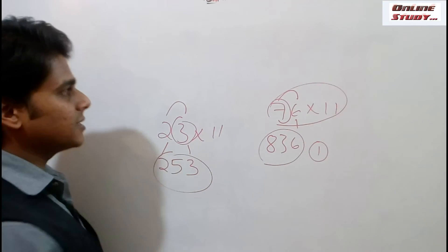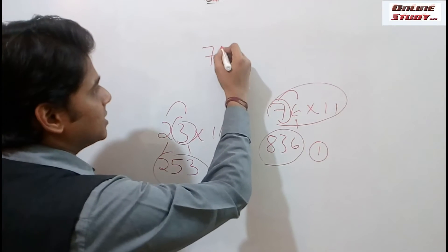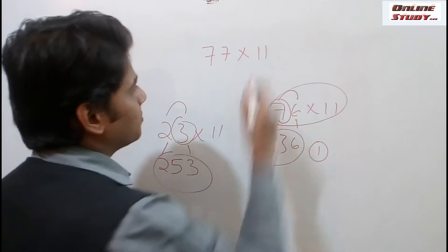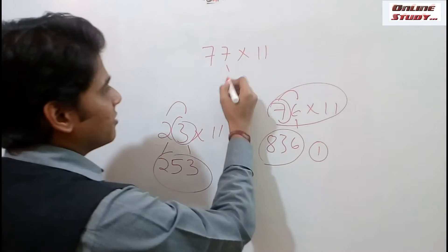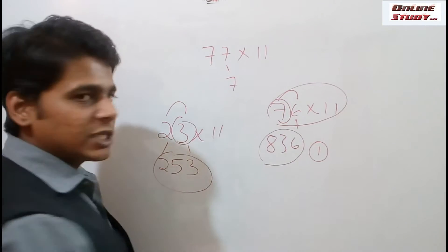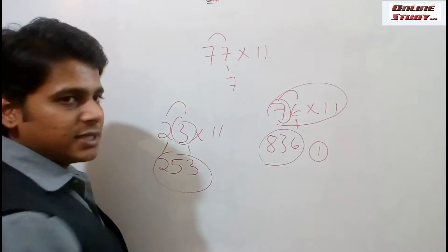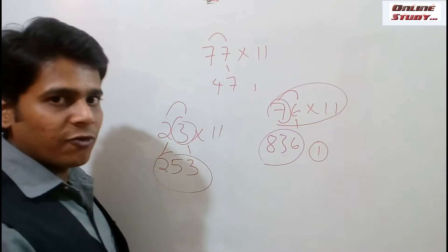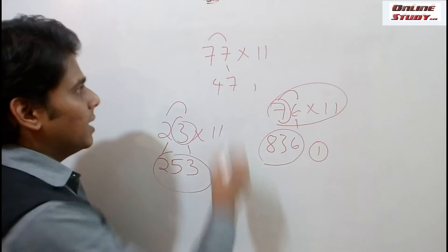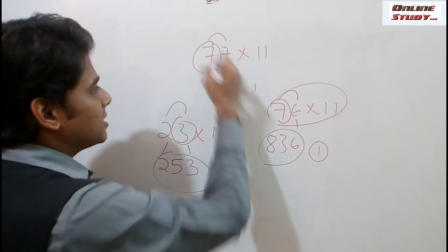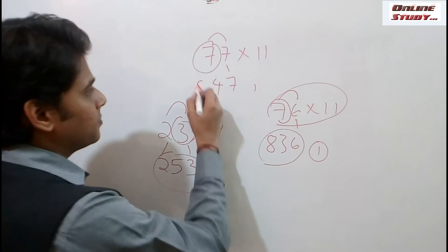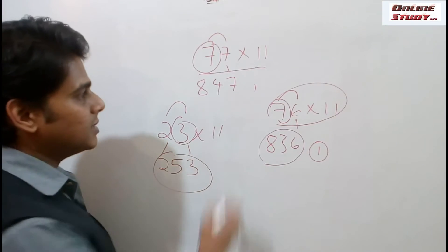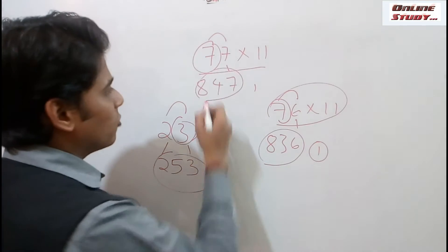We shall see another example: 77 into 11. We will place 7 first — that is the units place. 7 plus 7 is 14. We will place 4 and 1 will be carried forward. The final step is 7 plus 1, that is 8. So the multiplication of 77 into 11 is 847.